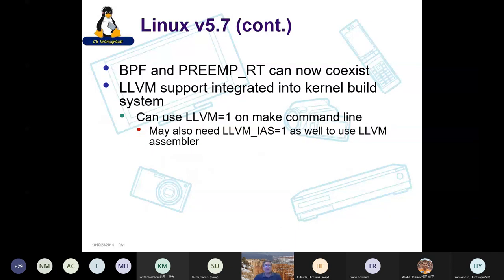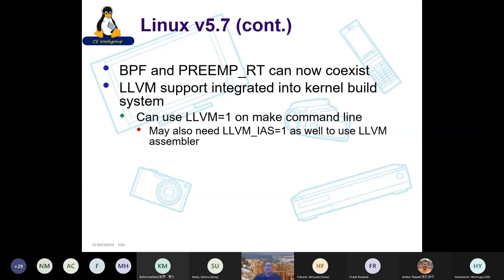A couple of other things in Linux 5.7: BPF and preempt RT — Berkeley Packet Filters, a system for injecting code into the kernel mainly for packet filtering — had a conflict in 2019 but those two patch sets can now coexist. And LLVM support was integrated into the kernel build system. You can now build the kernel using LLVM or Clang by passing something on the command line with appropriate toolchains, and you can also use the LLVM assembler.